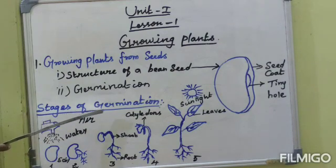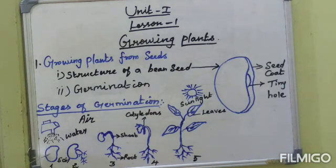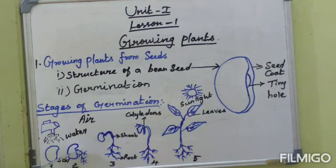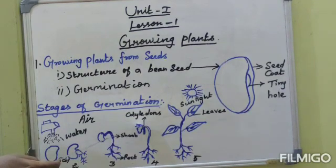The stages of germination: First, the healthy seeds are sown in the moist soil. In the first stage, the seed gets air, water and sunlight. In the second stage, the seed soaks up water, the seed coat breaks, and the root emerges out. In the third stage, the new plant develops shoot and root. At the fourth stage, the plant grows in size and develops leaves.